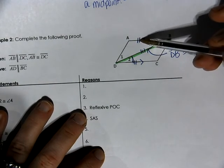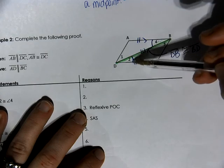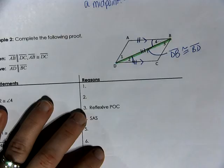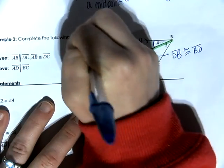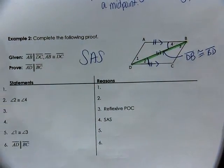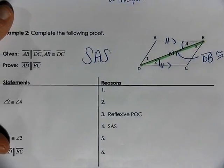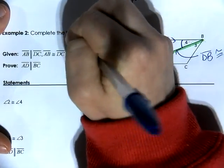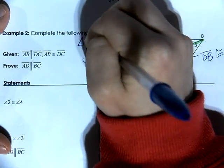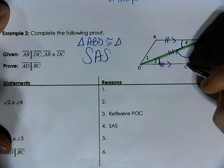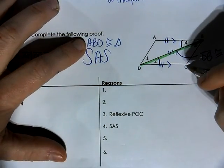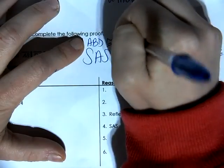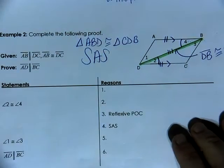Based on what I see here, I see side, angle, side. So I'm going to prove these triangles congruent by side angle side, but I need a triangle congruence statement. Triangle ABD would have to be congruent to triangle CDB — A matches with C, D matches with B, and B matches with D — so triangle CDB.